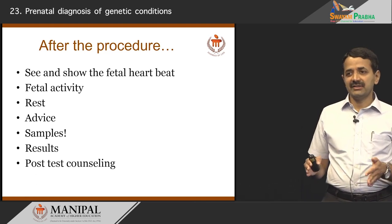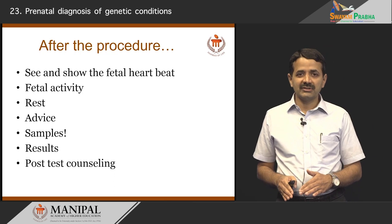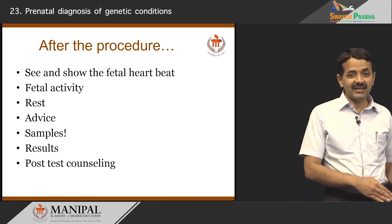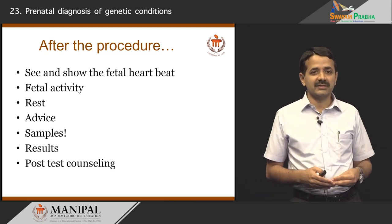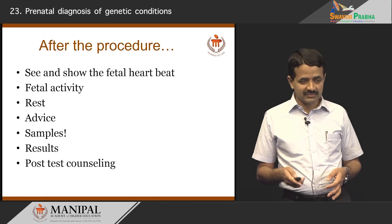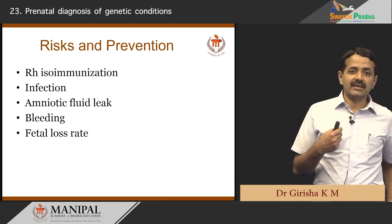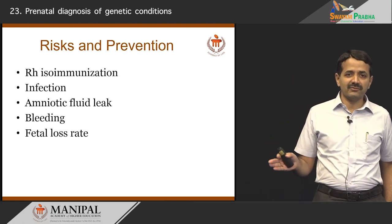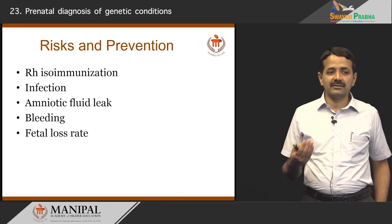After the procedure, show the fetal heartbeat and fetal activity to the mother to confirm the procedure was safe. Ask them to rest for 2 to 3 hours and advise on antibiotics or management of any pain. Samples must be handled carefully — transported safely with appropriate labeling, without mixing samples from different patients, and sent correctly to the lab. Inform them when to expect results and when to come for post-test counseling. Potential complications, though very rare, include RH isoimmunization if an RH-negative lady carries an RH-positive fetus, infection, amniotic fluid leak, bleeding, and fetal loss. These rare complications should be communicated to the patient.